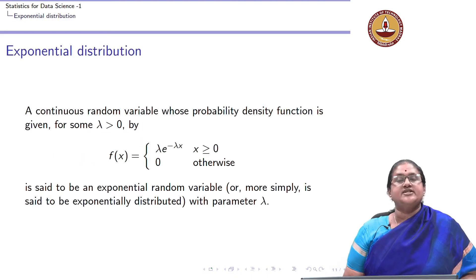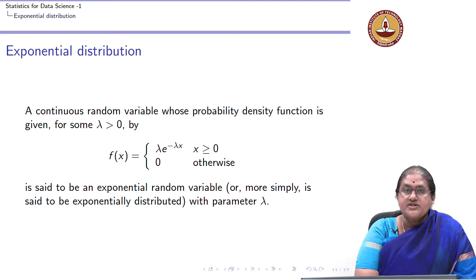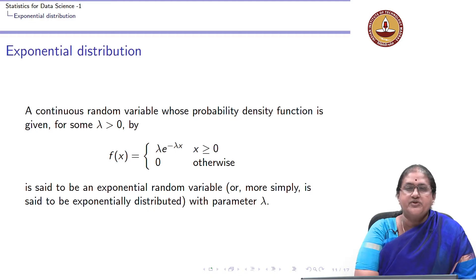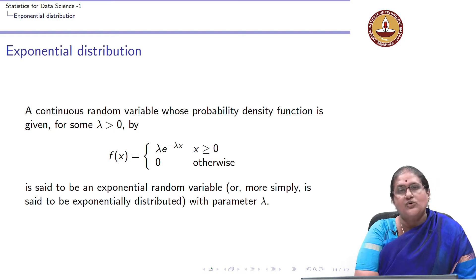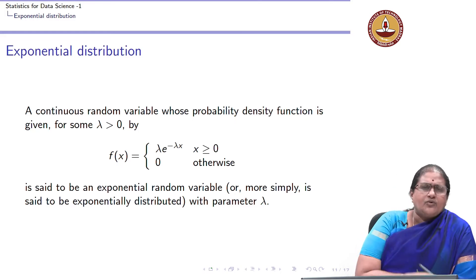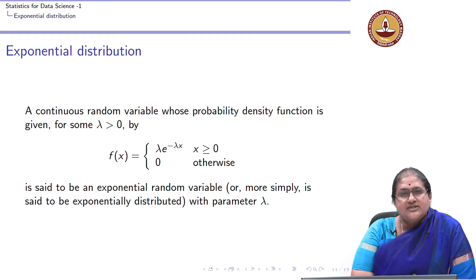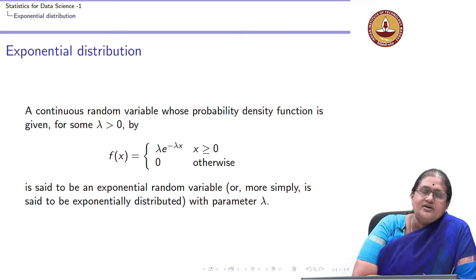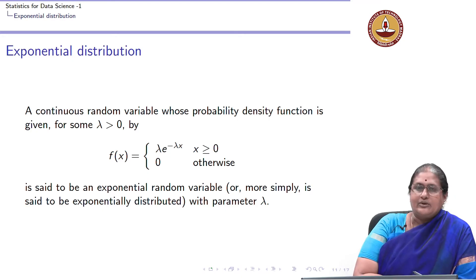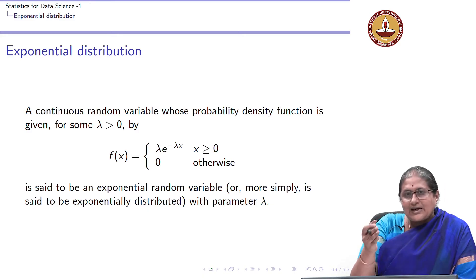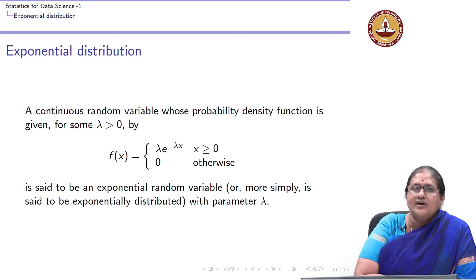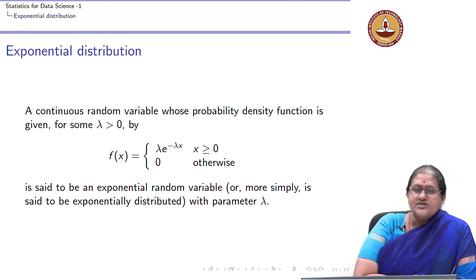The next distribution we are going to discuss in continuous distributions is the exponential distribution. Exponential distributions are commonly used to model inter-arrival times in a queuing system and service times. Wherever you have a sequence of people arriving into any system — whether it's a bank or a hospital — the inter-arrival times and service times are typically modeled using an exponential distribution.